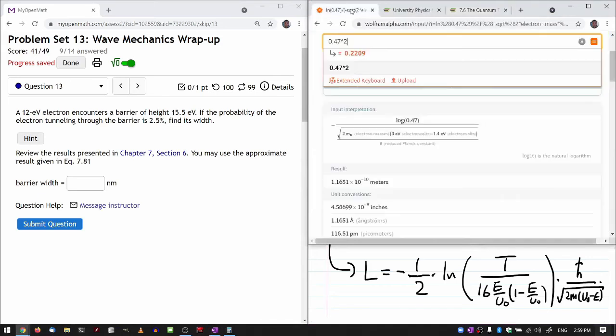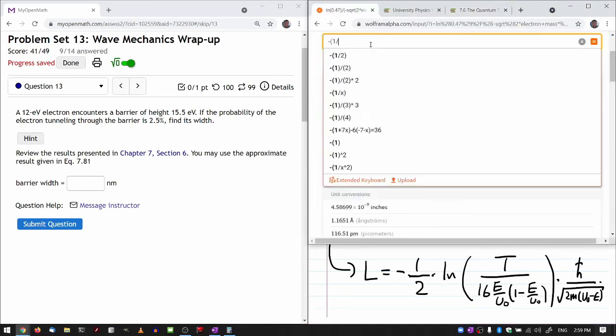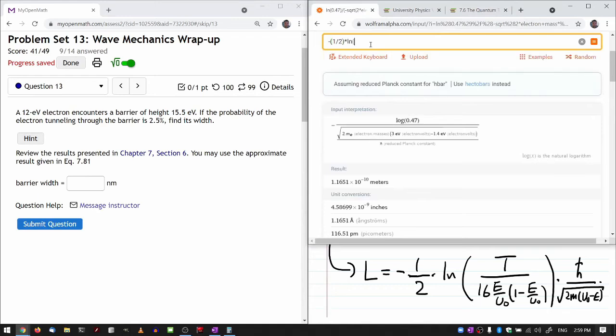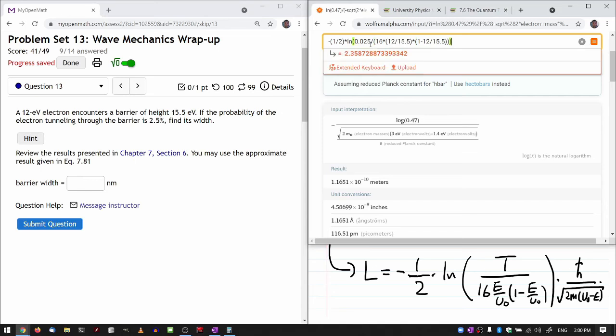Plug in the numbers here. It's going to be minus 1 over 2 times natural log of T is 2.5% or that should be 0.025 divided by 16 times, I'm just going to write it as 12 divided by 15.5 because the electron volt units will cancel out, times 1 minus again 12 divided by 15.5.